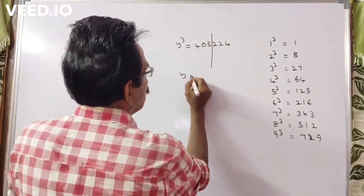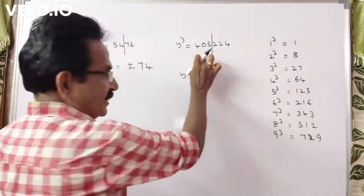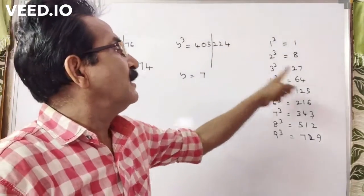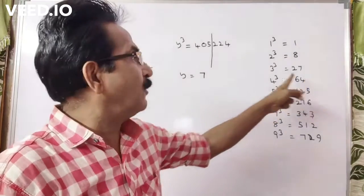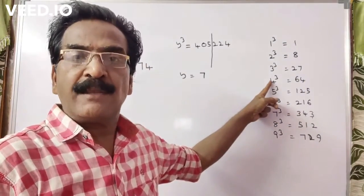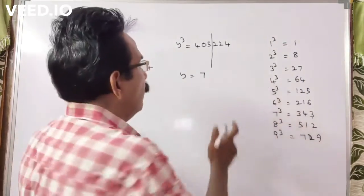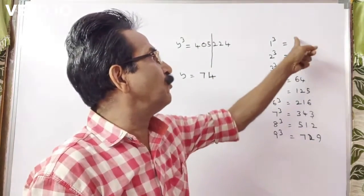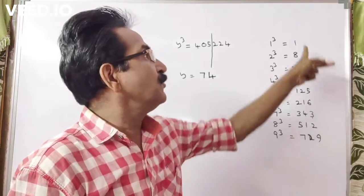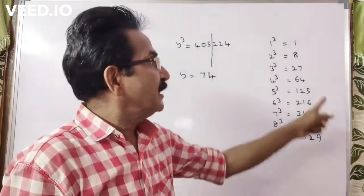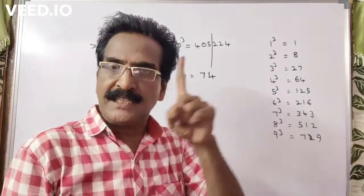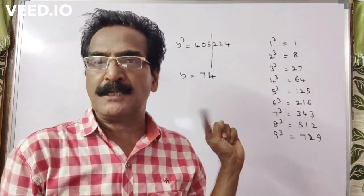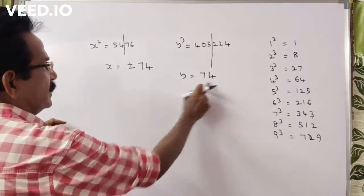So y starts with 7. For the second digit: the digit in the unit's place of 405224 is 4. If the digit in the unit's place is 4, the cube root unit digit must be 4, because 4 cubed ends in 4. So y is equal to 74.